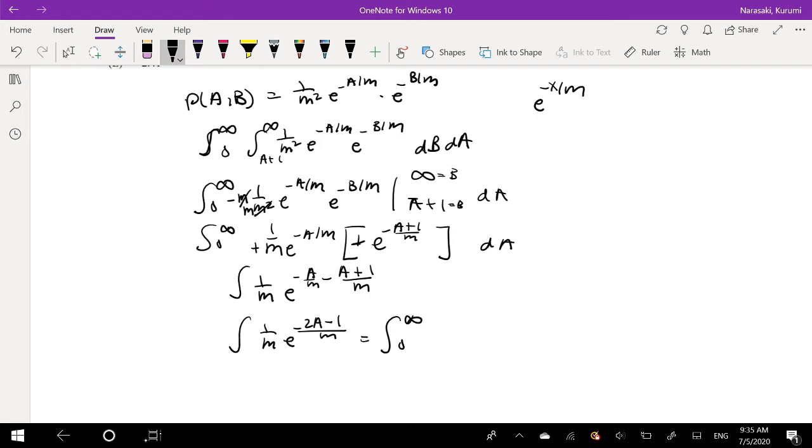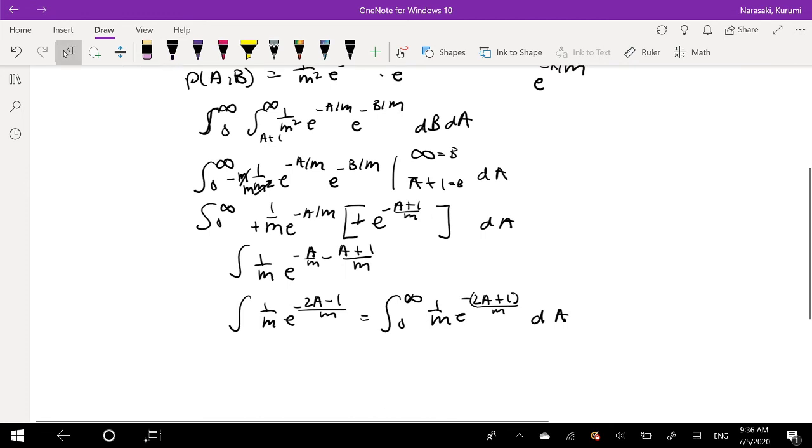Also equivalent to saying 1 over M, e to the negative 2A plus 1, factoring out that negative sign over M. We're integrating with respect to A. Alrighty, we got this. So then, this becomes, 1 over M is just a constant. The first part is e to the negative 2A plus 1 over M times M over negative 2.